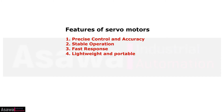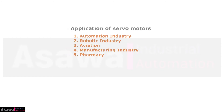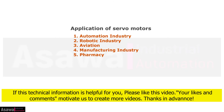The features of servo motors include: one, precise control and accuracy; two, stable operation; three, fast response; and four, lightweight and portable. Applications of servo motors include: the automation industry, robotic industry, aviation, manufacturing industry, and pharmacy.